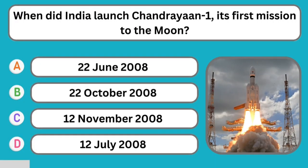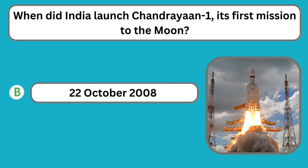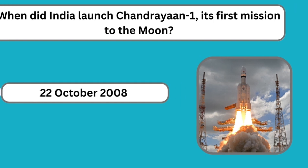Question number thirty: When did India launch Chandrayaan 1, its first mission to the moon? The correct answer is 22nd October 2008.